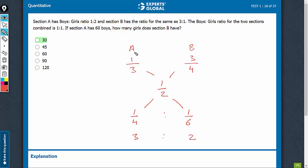Total number of students in class A and B are in the ratio 3 to 2. And if Section A has 60 boys,